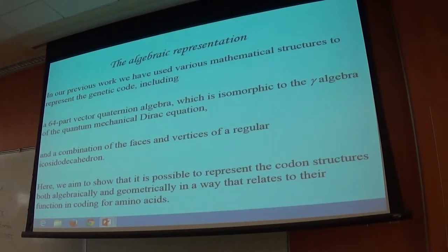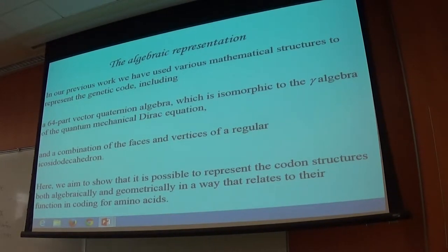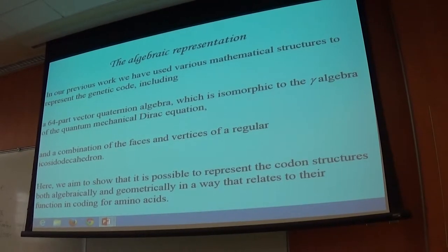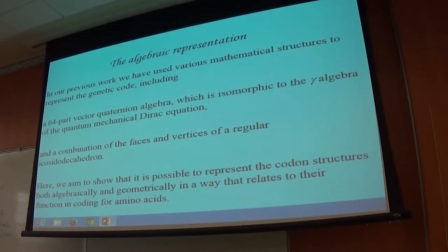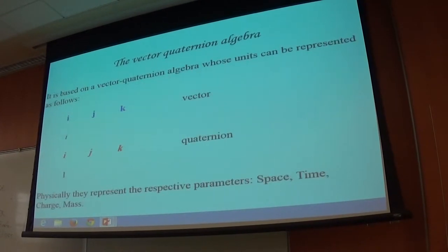We want to show that you can actually represent the codon structures — the 64 codons of the genetic code — both algebraically and geometrically, in order to begin to understand the code for amino acids, and to make that manageable and useful.